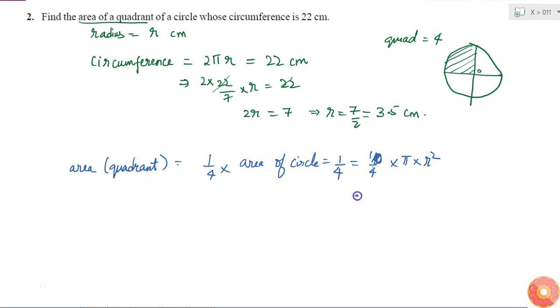What is the value of π? It is equal to 22 by 7. And R² is equal to 3.5 cm into 3.5 cm.